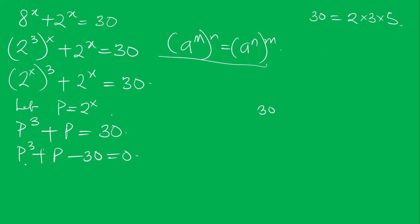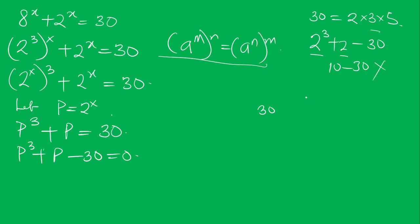Let's try P equal to 2: 2 to the power 3 plus 2 minus 30 gives 8 plus 2 minus 30, which is 10 minus 30, and that is not zero, so it's not correct. Now let's try P equal to 3: 3 to the power 3 plus 3 minus 30 gives 27 plus 3 minus 30, which is equal to 0. So this is correct.